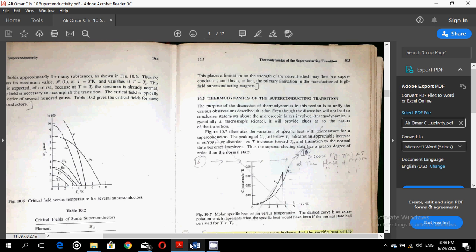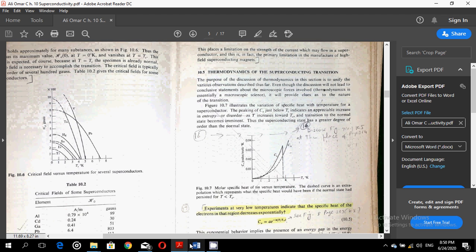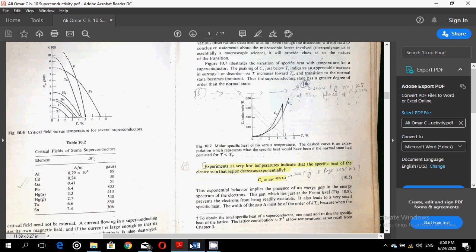Figure 10.7 illustrates the variation of specific heat with temperatures for a superconductor. The peaking of Cv just below Tc indicates an appreciable increase in the entropy or disorder as T reaches towards Tc and the transition to the normal state becomes imminent. Thus, the superconducting state has a greater degree of order than the normal state. So please have a close look at this figure 10.7.